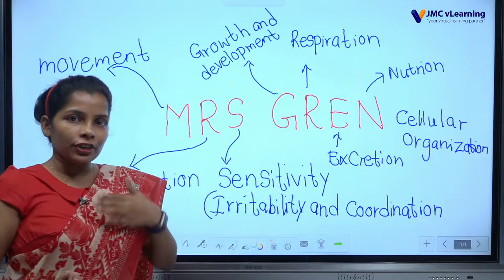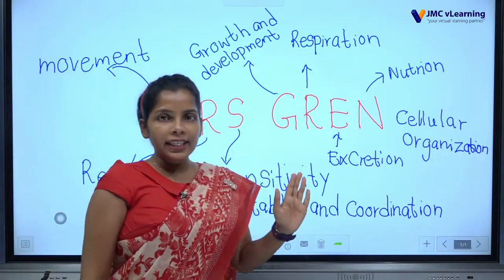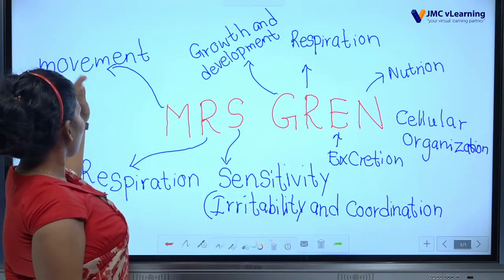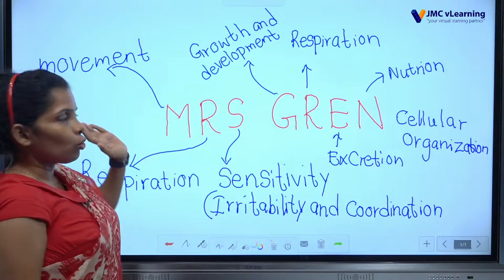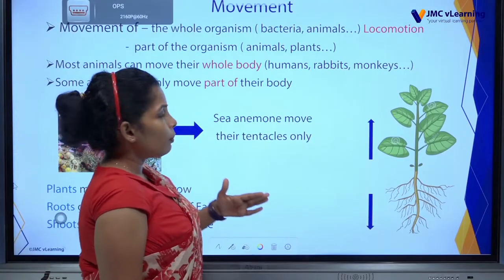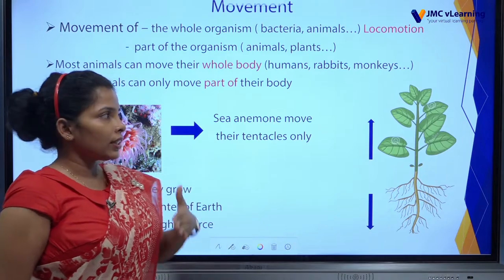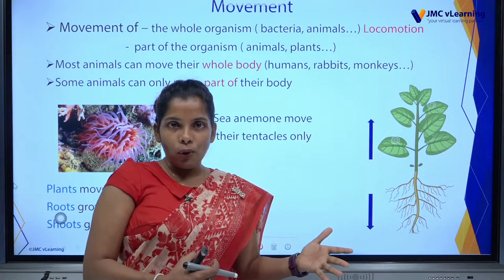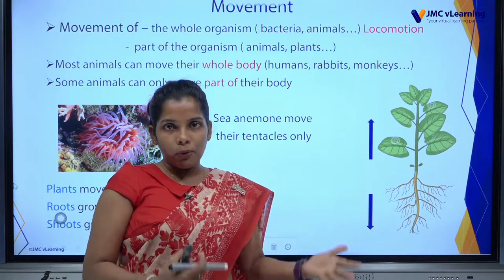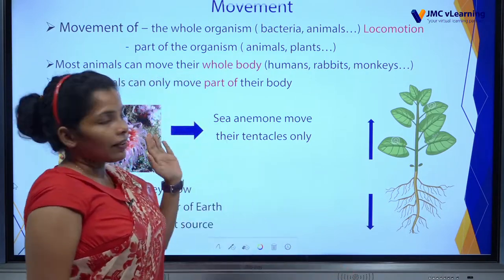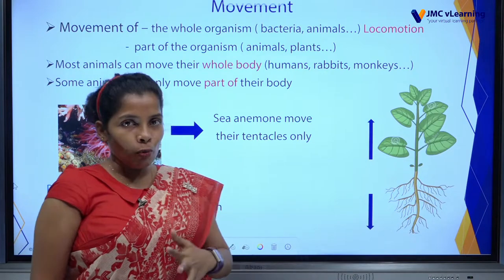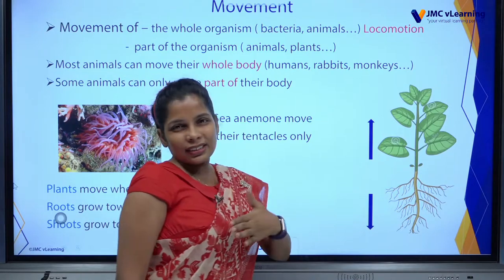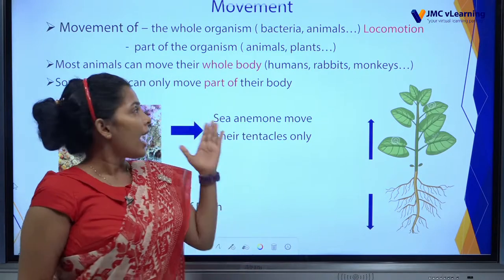Today we are going to discuss those eight characteristics of organisms. First, we are going to discuss Movement. Movement means changing the location of their whole body or parts of their body. We consider this as movement. Here, movement includes the whole organism — just like bacteria and animals.